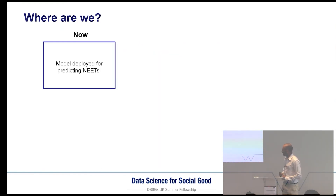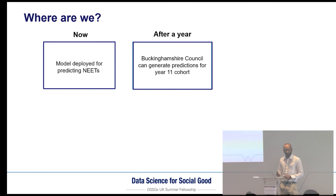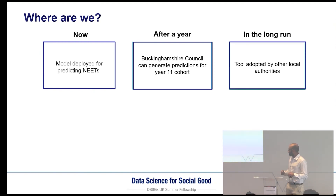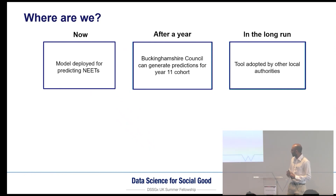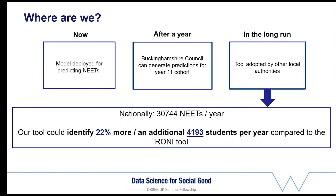Going forward, we hope foremost that the council can use this tool to help identify high-risk students now and for next year's cohort. In addition, we have open-sourced our code to drive adoption by other local authorities and hopefully apply this tool to the rest of the UK. Every year, there are about 31,000 students who become NEET in the UK, and using our tool could help identify about 4,200 more students than existing tools, helping improve the educational system.